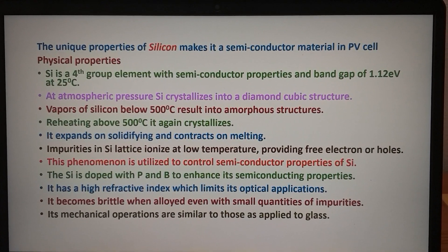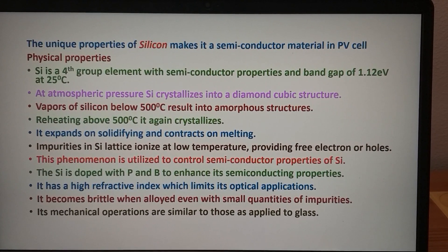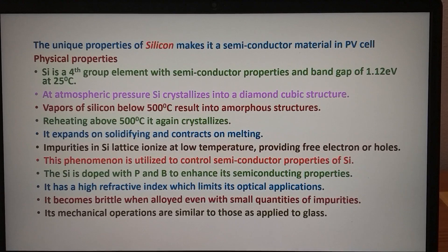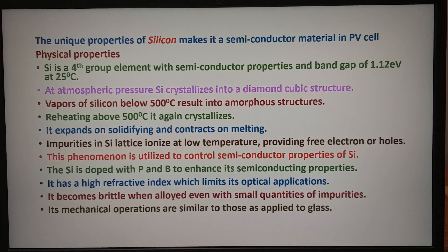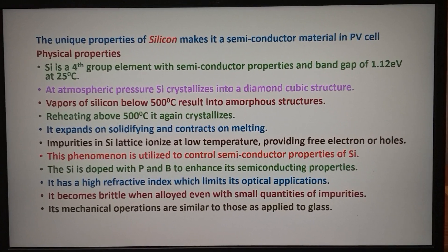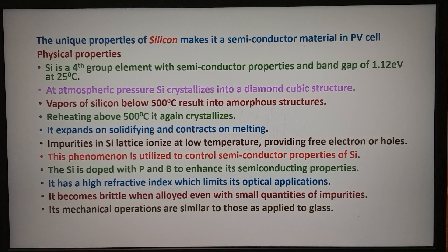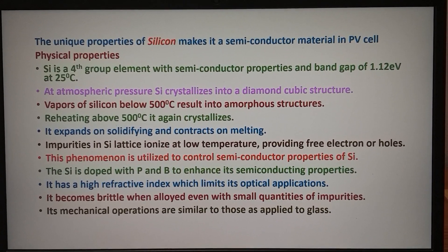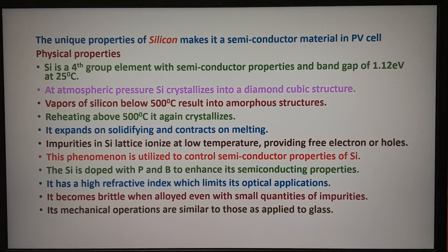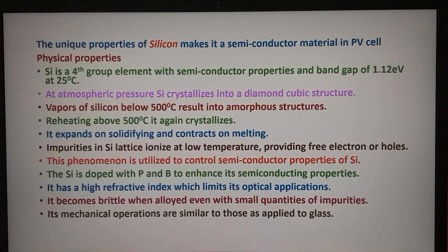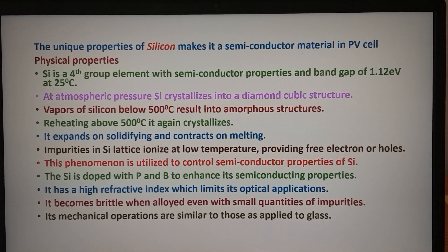Let us learn how to produce solar-grade silicon. For that, we should first learn what are the properties of silicon that makes it a semiconductor material for PV cells. So first we will discuss the physical properties, then the chemical properties. Silicon is a fourth group element with semi-conductive properties and a band gap of 1.12 electron volts at 25 degrees centigrade, which makes it a semi-conducting material. At atmospheric pressure, silicon crystallizes into a diamond-cubic structure.